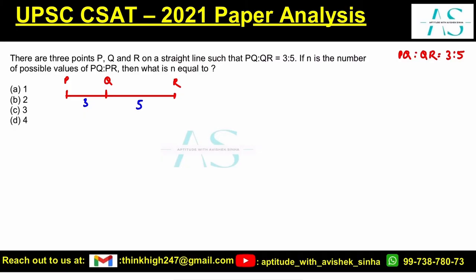If n here represents the number of possible values of PQ/PR, what is PQ? PQ is three. P to R is three plus five, which is eight.